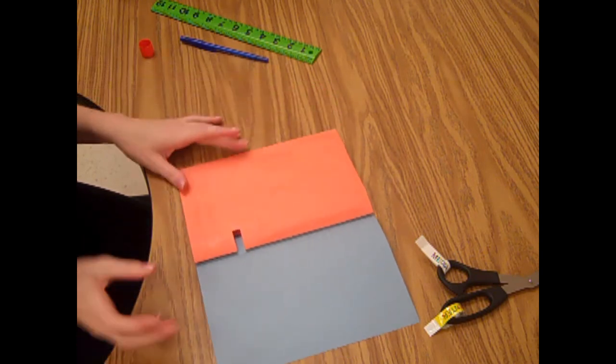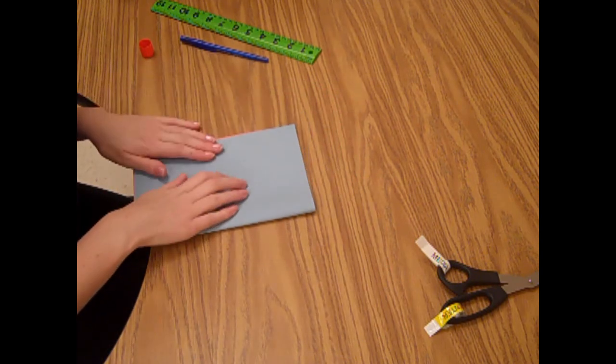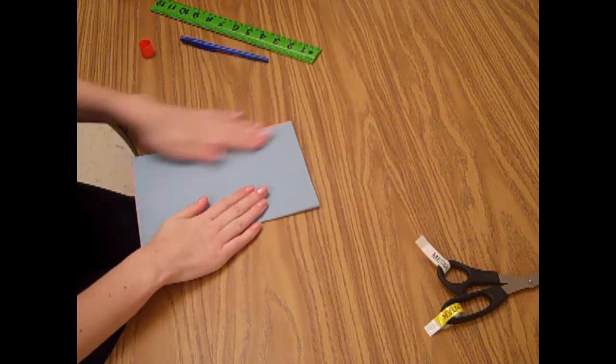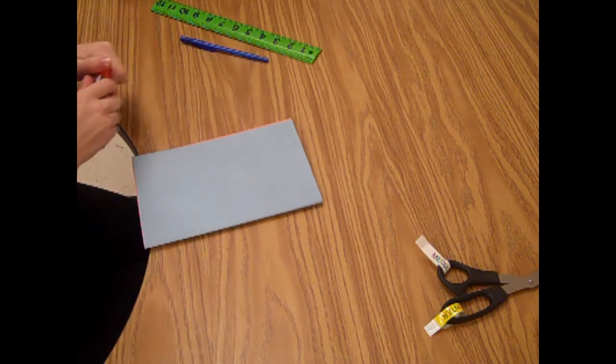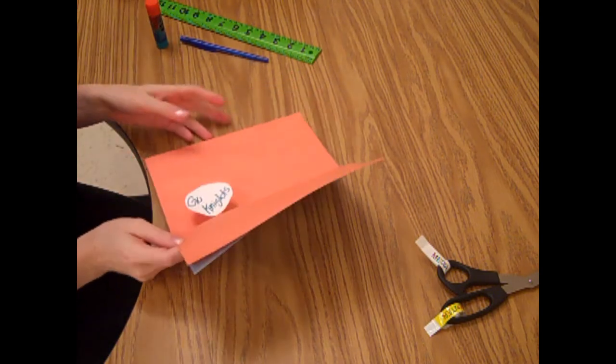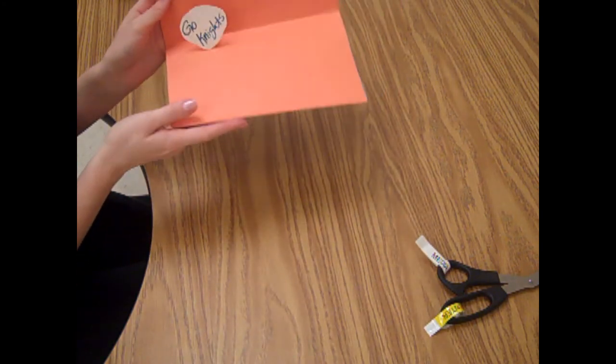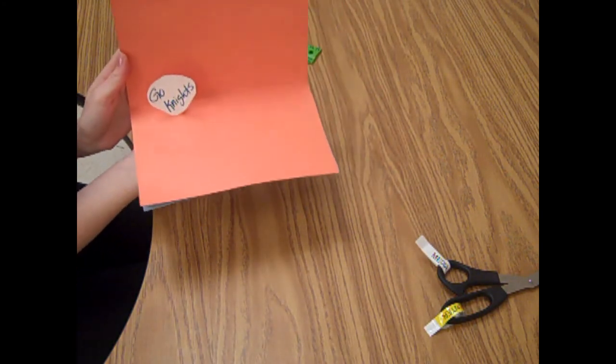Glue. Pull it over. Make sure it's all glued. And there you go—your little pop-out. Fold. Open. There you go.